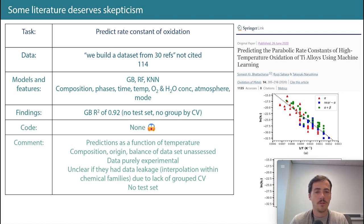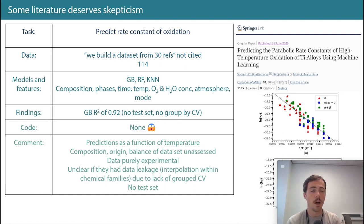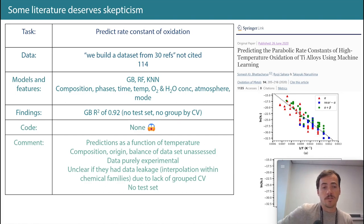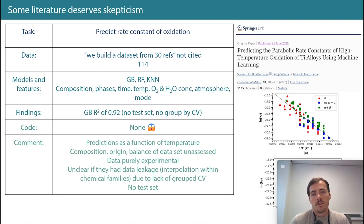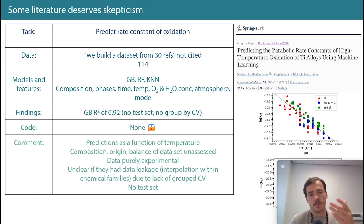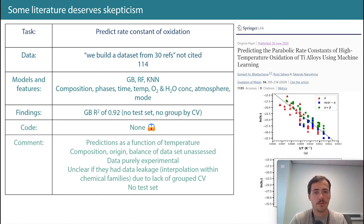Without providing code or data, we can only assume the high performance comes from not grouping properly for true testing on unique new compositions. The composition origin and balance of the dataset were never assessed. So in my view, this is not a useful paper — I don't know what I can actually learn from it or use it for.